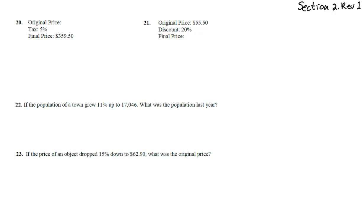So number 20, the original price we don't know, we'll put a variable there for P. The tax is five percent, so five percent of that original price. 0.05 of the P is the tax that gets added on to the price and that equals 359.50. And that's the final price.